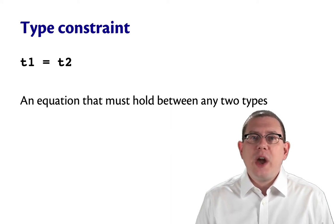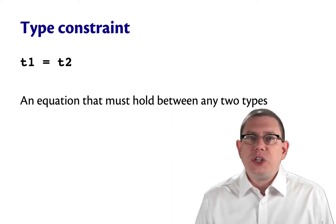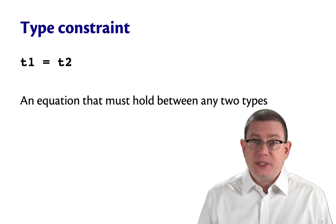A type constraint is an equation, T1 equals T2, between any two types, T1 and T2.